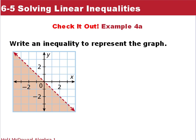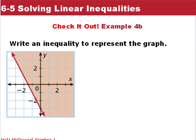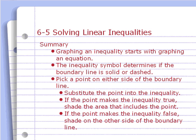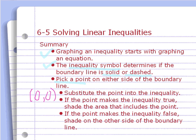Now it's your turn with the Check It Outs. Remember: a dashed line means strictly less than or greater than, and a solid line means less than or equal to or greater than or equal to. To summarize: graph the inequality as if it were an equation. The inequality symbol tells you whether to use a solid or dashed line. Then pick a point — preferably (0, 0) if it's not on the line — to determine which side to shade. If it makes the inequality true, shade to include that point; if false, shade the other side. Good luck, and bring questions to class.